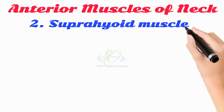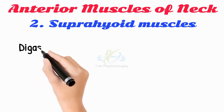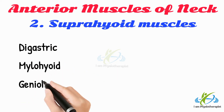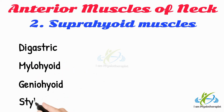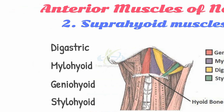The suprahyoid muscles are four muscles located superior to the hyoid bone. These muscles include the digastric, mylohyoid, geniohyoid, and stylohyoid muscles. The main function of these muscles is positioning of the hyoid bone and coordination of the movements of the floor of the mouth and the hyoid bone while swallowing or vocalization.